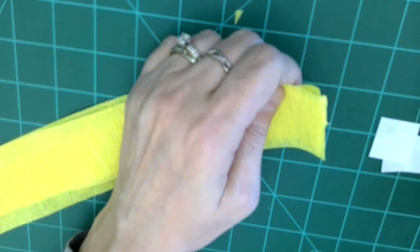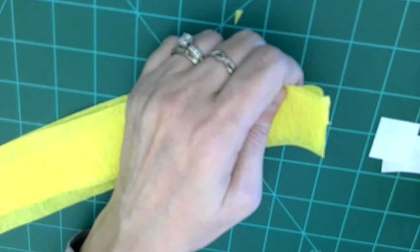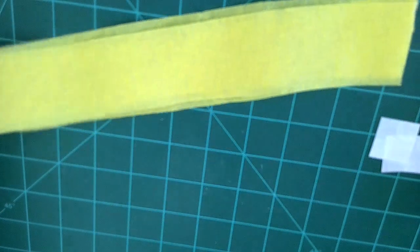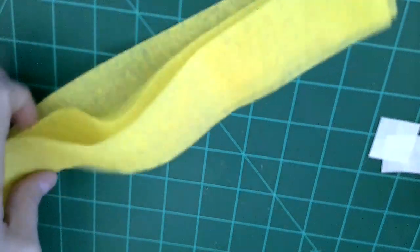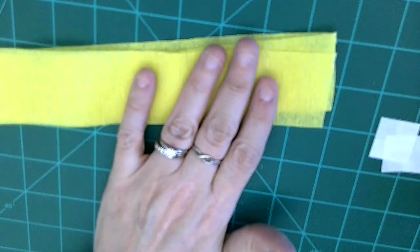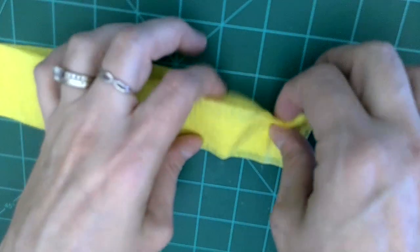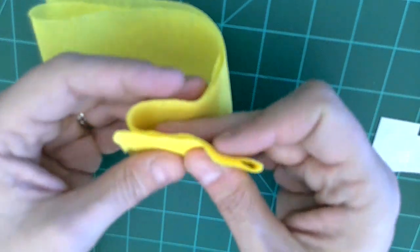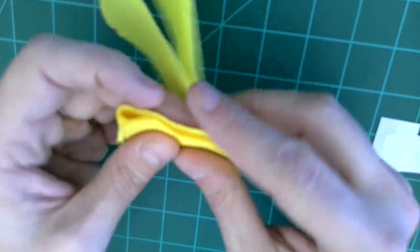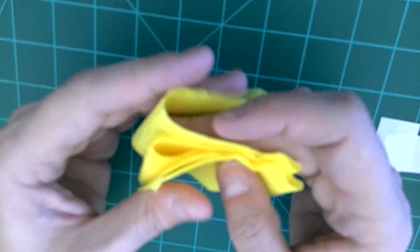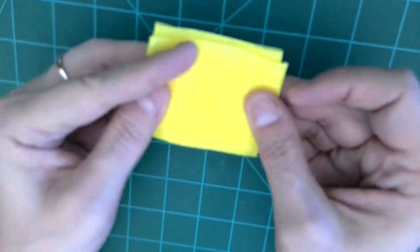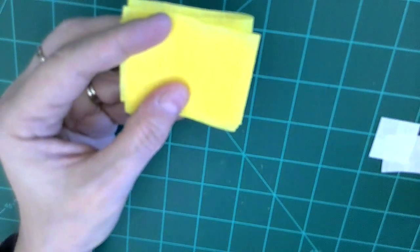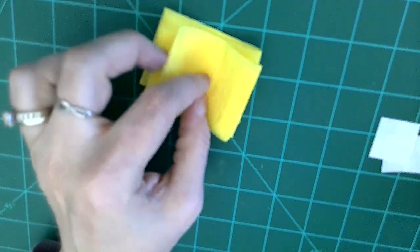For the spider mum type flower, what you'll want to do is to make this crepe paper streamer into approximately three inch accordion folds.